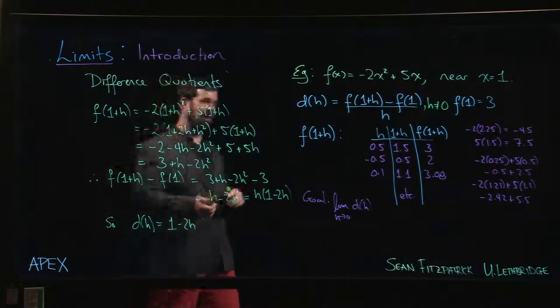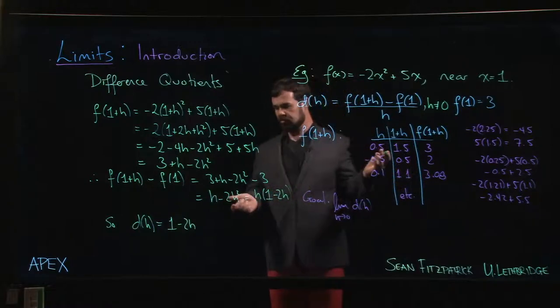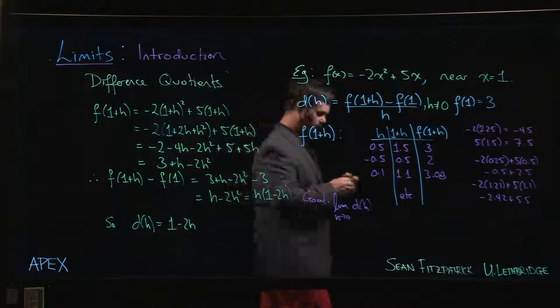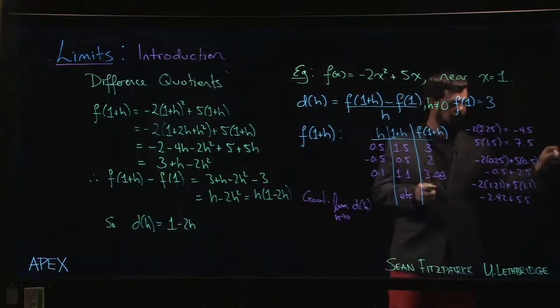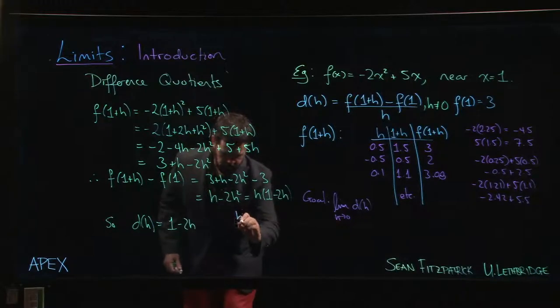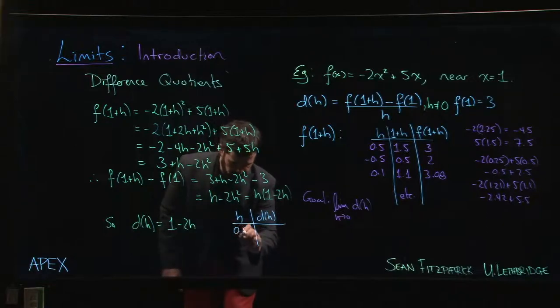So now if I wanted to calculate this difference quotient for various values of H, I'm in a much better place. So now if somebody says, 'I want a table of values' - I want H, I want d of H - I want to consider H at 0.5, 0.1, 0.01, and so on.